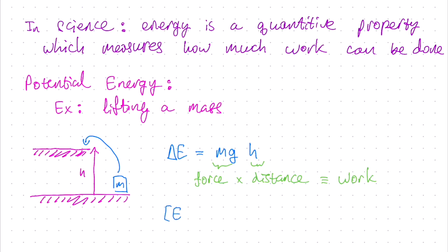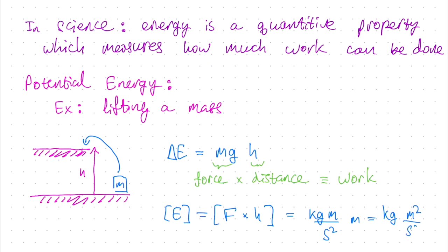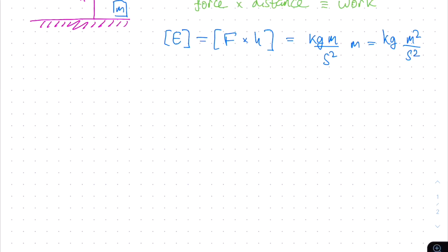Now what are the units of energy? Well, we have force times distance. Force has the units of newtons, or kilograms meters per second squared, which is equal to units of mass times acceleration, and distance of course has units of meters. Putting these two together, we get units of kilograms meters squared per second squared.